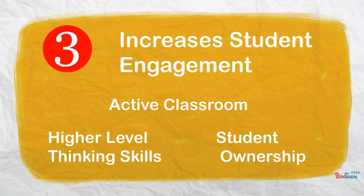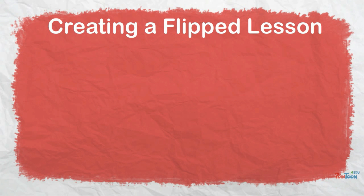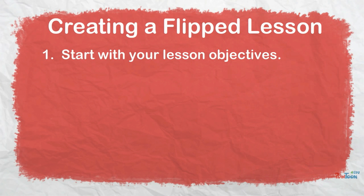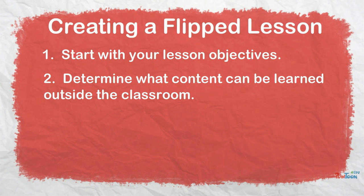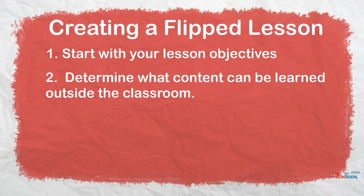So how do you do this? I've outlined four steps we're going to go through in this lesson. Step number one, any good lesson starts with good lesson objectives, and it's no different with flipped learning. Number two, determine what content can be learned outside the classroom — consciously think about what information you can give students at home that will prepare them for the in-class lesson that will get at those higher-level thinking skills.